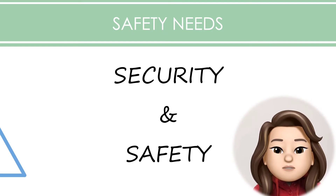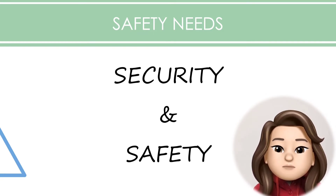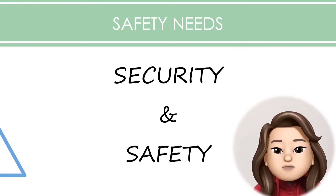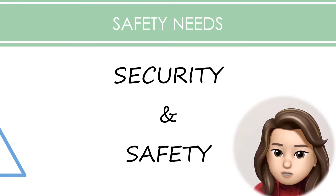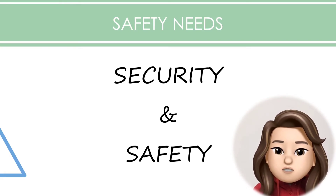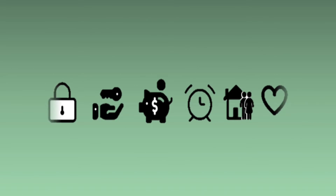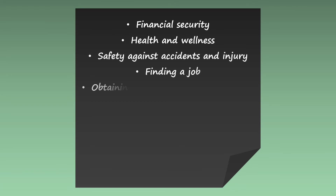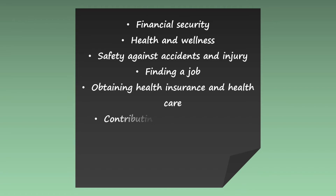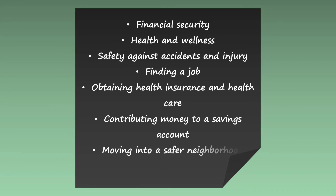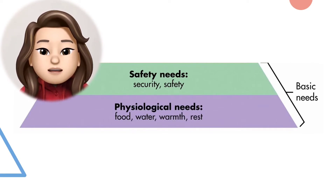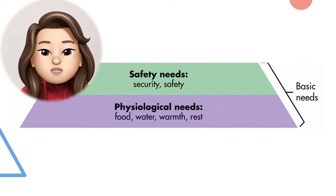As we move up to the second level of Maslow's hierarchy of needs, the requirements start to become a bit more complex. At this level, the needs for security and safety become primary. People want control and order in their lives, so this need for safety and security contributes largely to behaviors at this level. Some of the basic security and safety needs include financial security, health and wellness, safety against accidents and injury, finding a job, obtaining health insurance and healthcare, contributing money to a savings account, and moving into a safer neighborhood. Together, the safety and physiological levels make up what is often referred to as the basic needs.